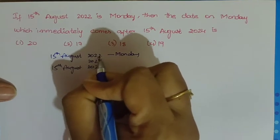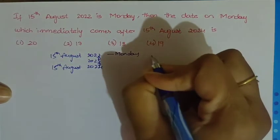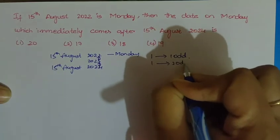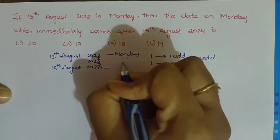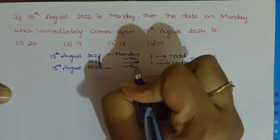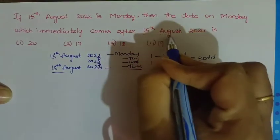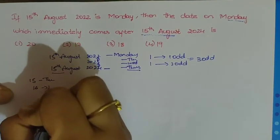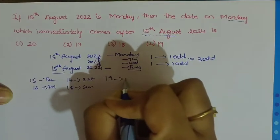From 2022 to 2024, we consider years 22-23 and 23-24. February 2023-24 gives 25 days; a non-leap year gives 1 odd day and a leap year gives 2 odd days, so total here is 3 odd days. Monday plus 3 odd days: 15th is Thursday, 16th Friday, 17th Saturday, 18th Sunday, 19th is Monday.